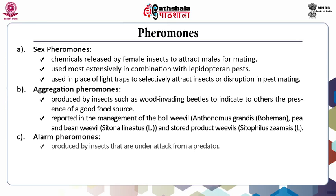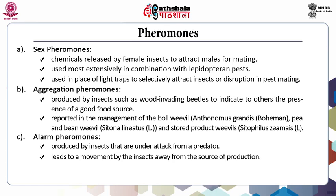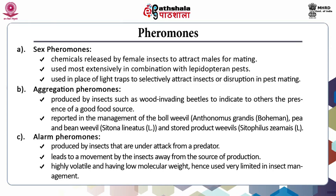Alarm pheromones are produced by insects under attack from a predator and lead to movement by the insects away from the source of production. They are highly volatile and have low molecular weight, hence they are used very limitedly in insect management.